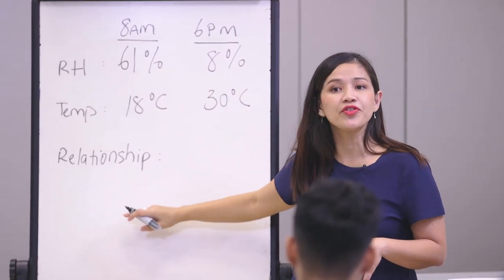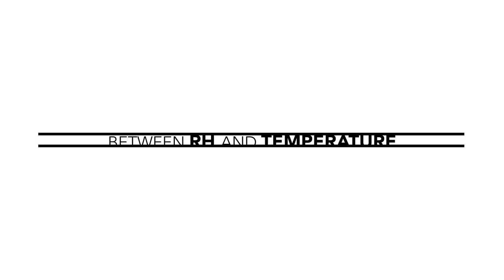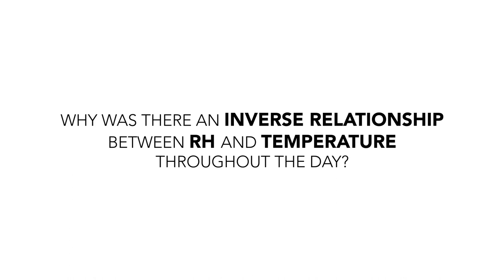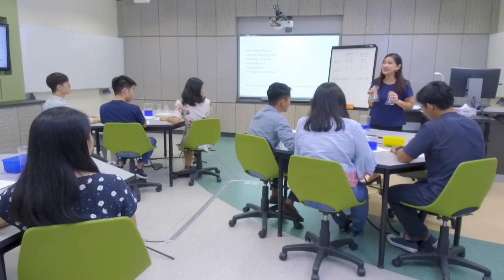What does this tell you about the relationship between these two weather elements? Now we're going to look at why there was an inverse relationship between relative humidity and temperature. I want you to imagine, in unpacking what relative humidity is, that this is the amount of water vapour in the air on that day, and that these two conical flasks represent the carrying capacity of the air at different points in the day. Just follow the instructions on the worksheet and proceed with the demonstration.